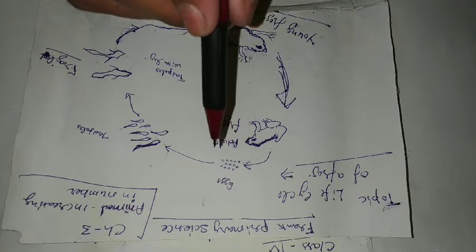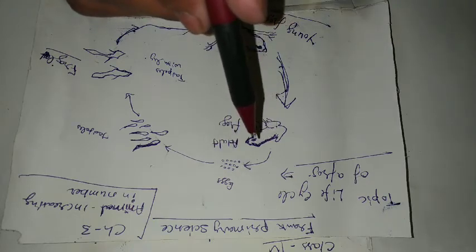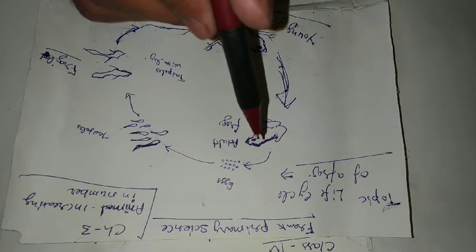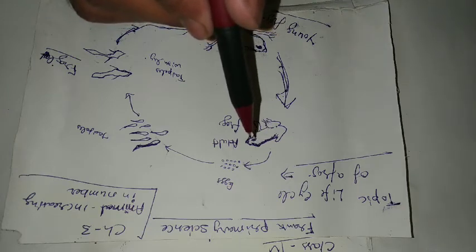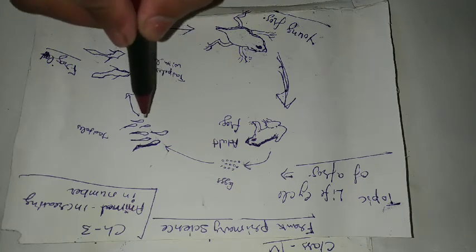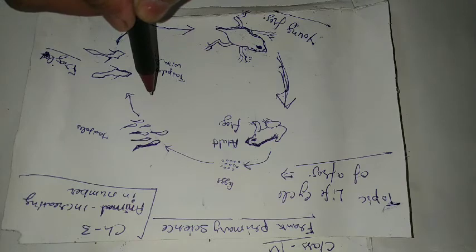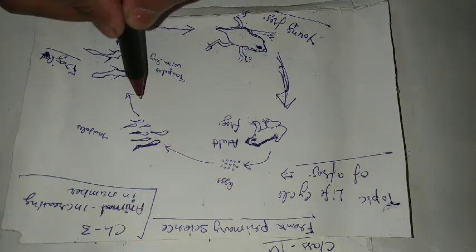This whole mass of fertilized eggs with jelly is called spawn. Now second is tadpole. As the fertilized egg matures, it splits into more eggs and forms a tadpole.